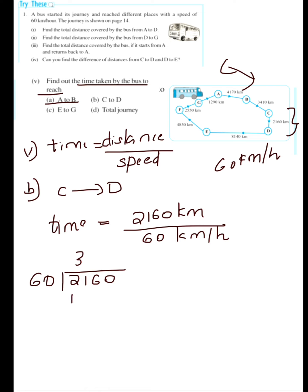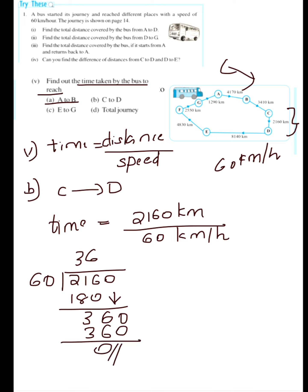Dividing 2160 by 60: 3, 180; 3, 0; 6, 360 — the answer is 36. So the time taken by the bus to reach from C to D equals 36 hours. Don't forget the unit — the answer is 36 hours.